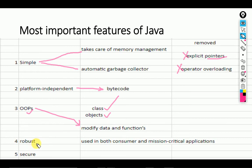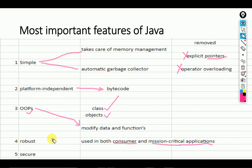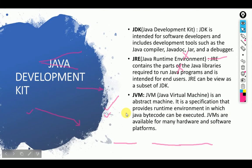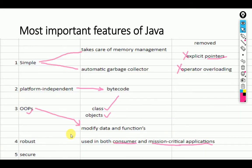The fourth concept is robustness. Java is a robust language because we can use it in both consumer problems and mission critical applications. Mission critical applications are real-time applications — for example, rocket launching, microwave systems, and similar things. That's why Java is a robust language. Java is also very secure. And the sixth feature is multi-threading — Java is a multi-threaded language.